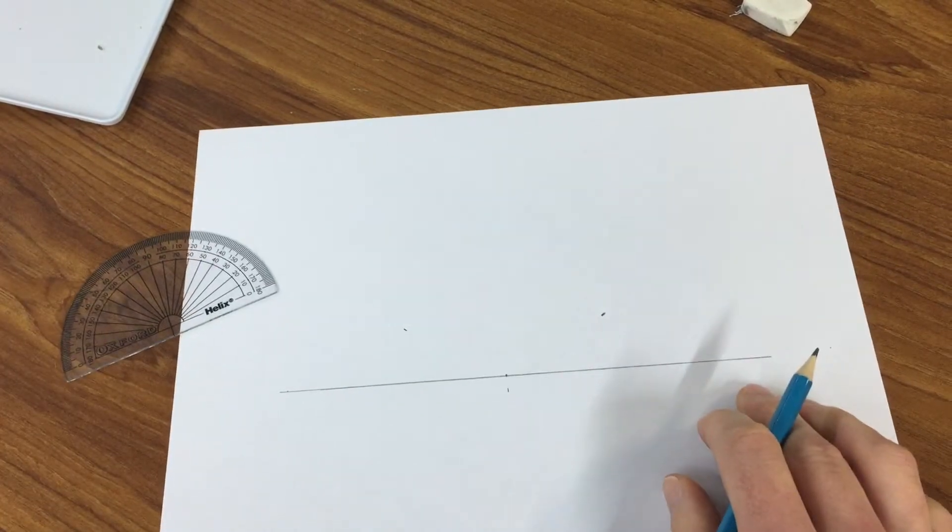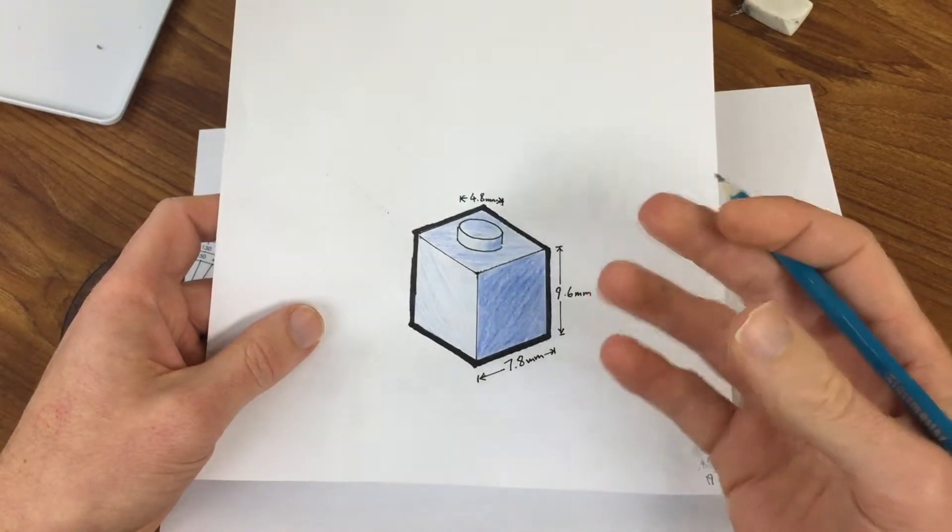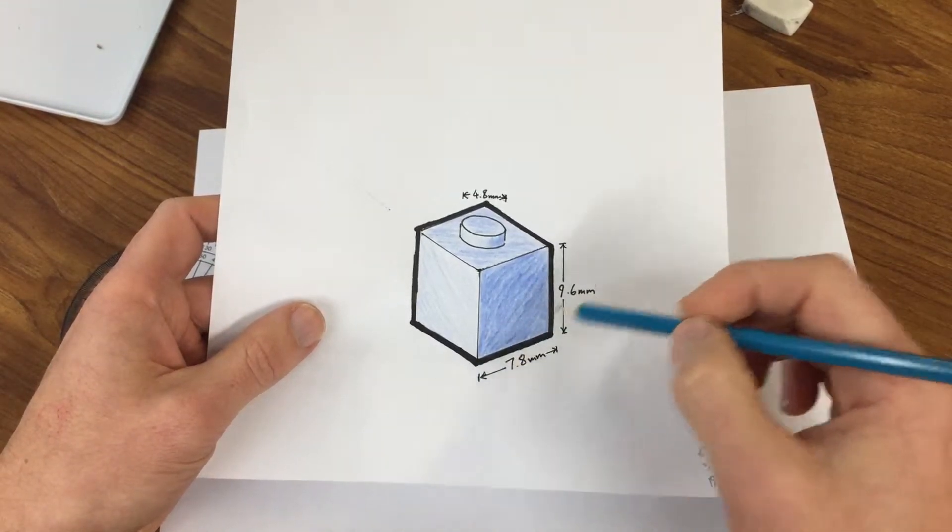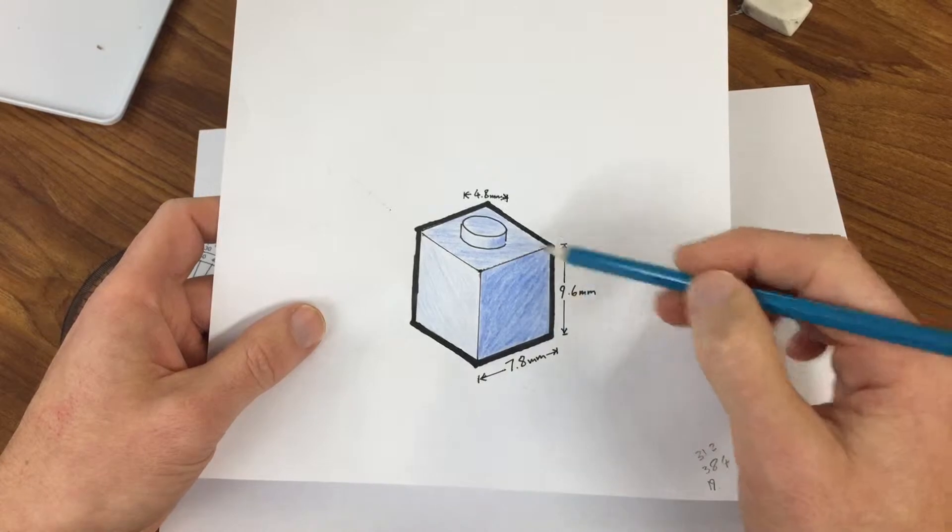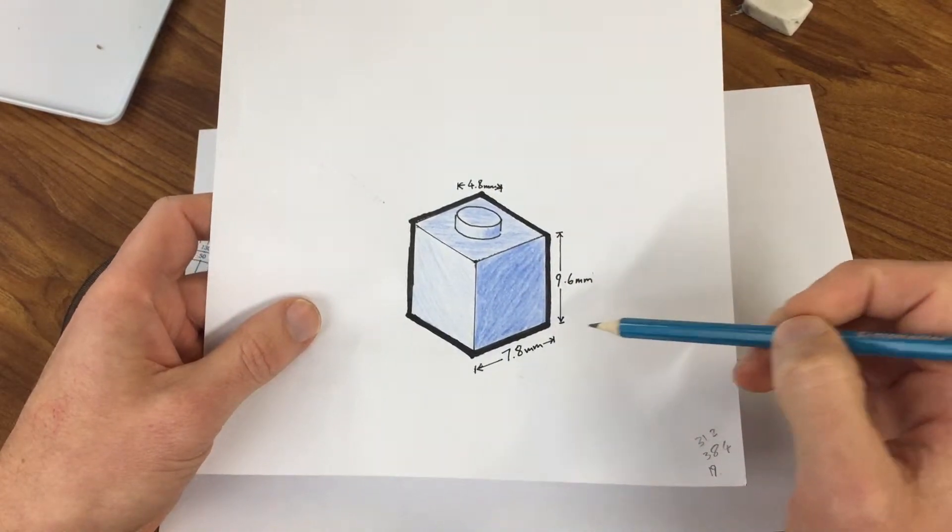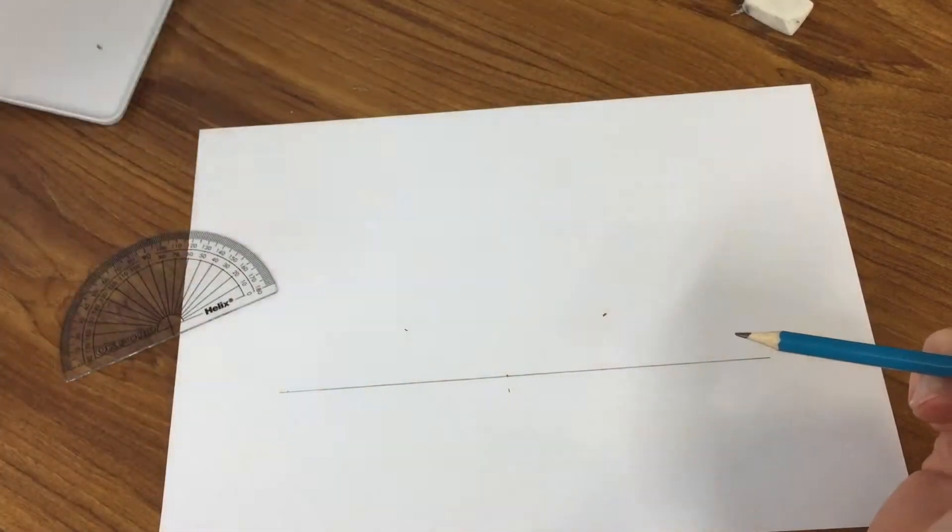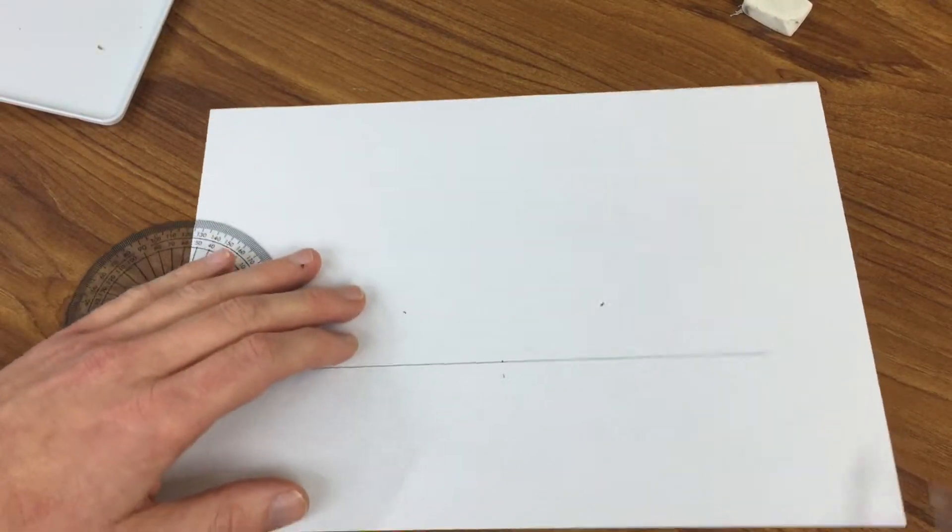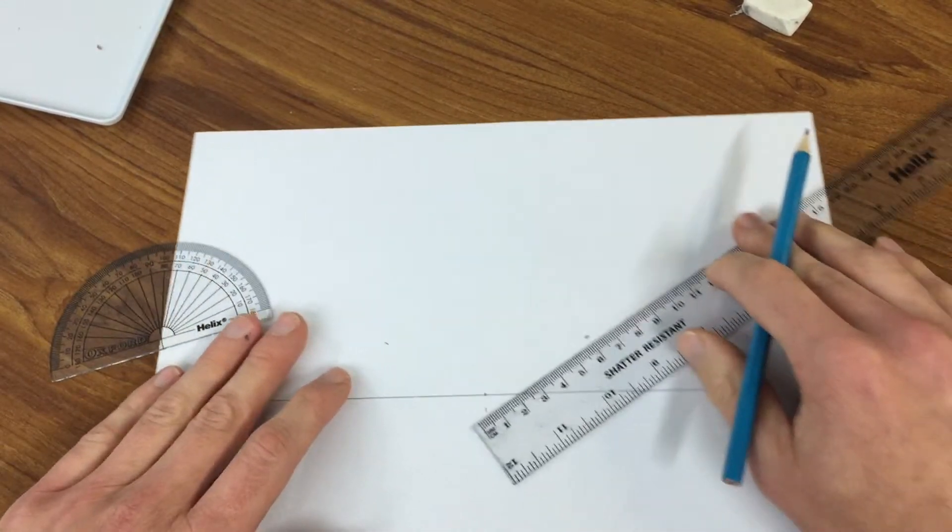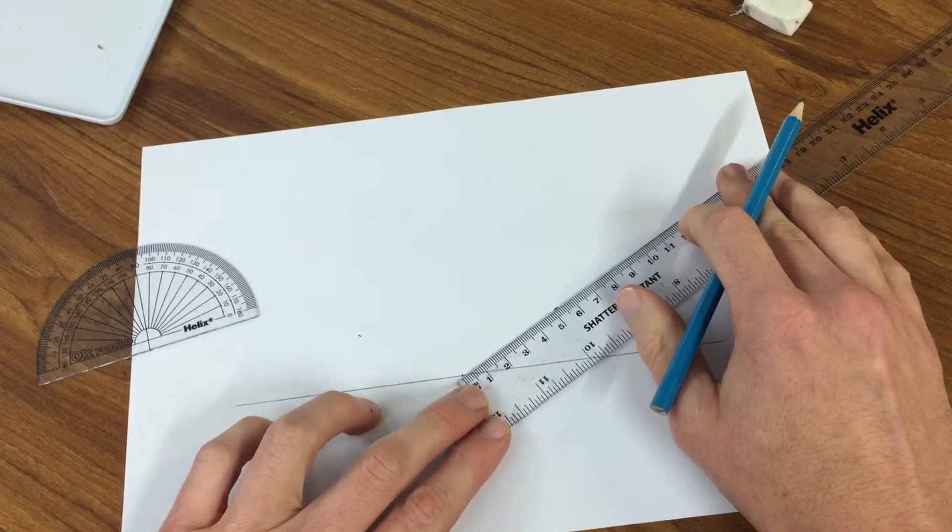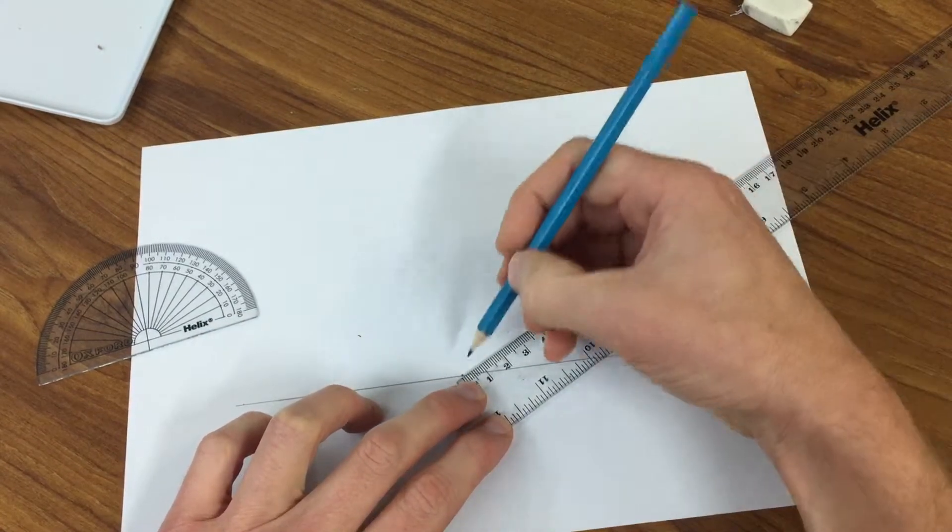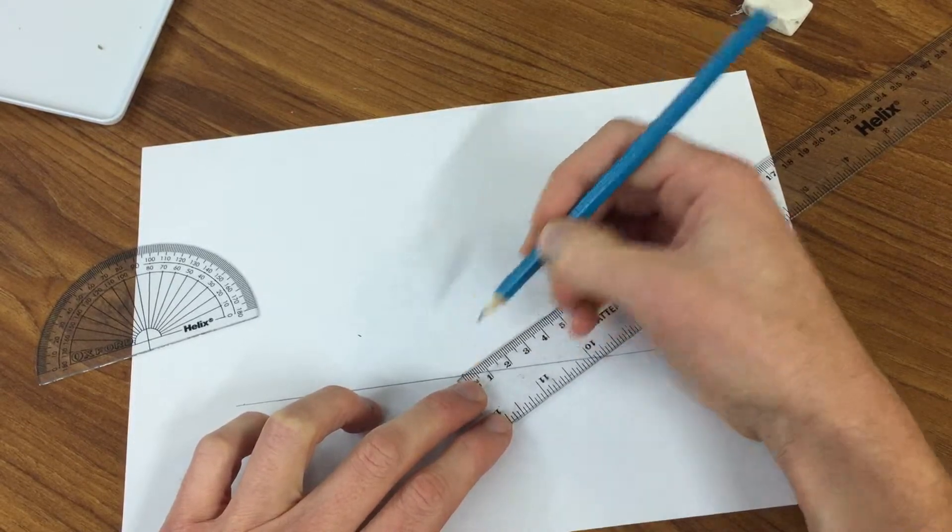Now what I've done is I've scaled this Lego brick up by a factor of four. So I've measured the Lego measurements and just times it by four. So 7.8 millimeters times four is actually 31.2. So this length here is going to be lined up and you're going to draw on 31 millimeters.